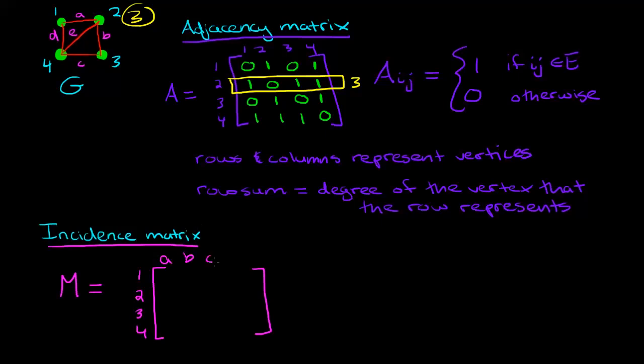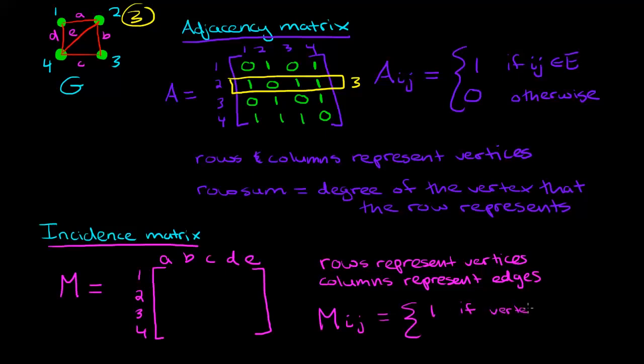So that I can represent these edges right here. A, B, C, D, and E. So that's one key difference already. Rows represent vertices and columns represent edges. And we define the ij entry of the matrix M to be a 1 if vertex i belongs to edge j and 0 otherwise.